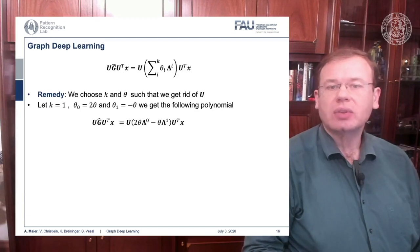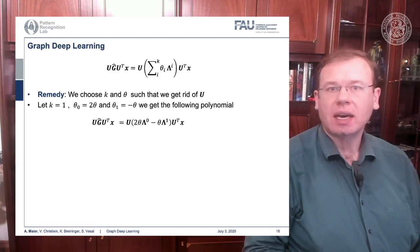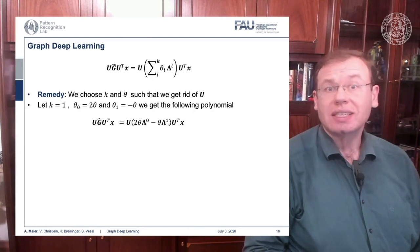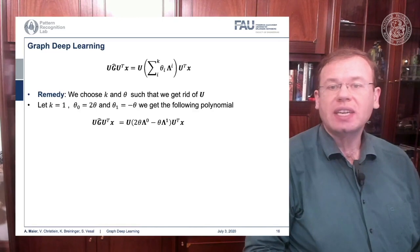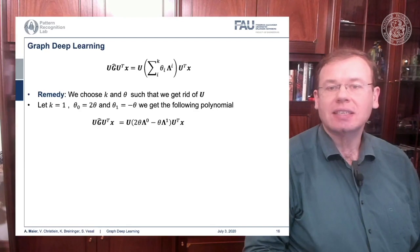Now let's look into the configuration of G hat. G hat can be expressed as 2 times theta times lambda to the power of 0. Remember lambda is a diagonal matrix, so we take every element to the power of 0. This is actually a unity matrix, and we subtract theta times lambda to the power of 1, which is just lambda.